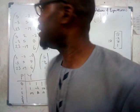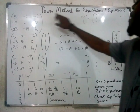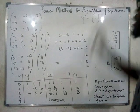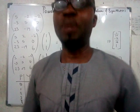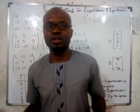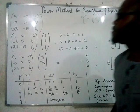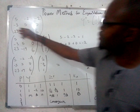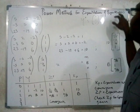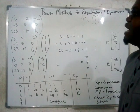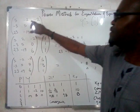Hello, you're going to learn how to use the power method to solve for eigenvalues and eigenvectors. So let's say we are given this matrix and we are told to find the eigenvalues and eigenvectors of the highest modulus. You have five, minus two...